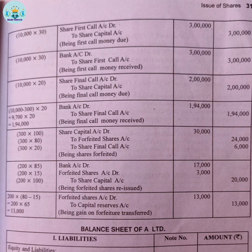200 shares are reissued. 200 shares into Rs.(80-15) = already forfeited amount applied. The forfeited shares account balance is used to offset the reissue discount.